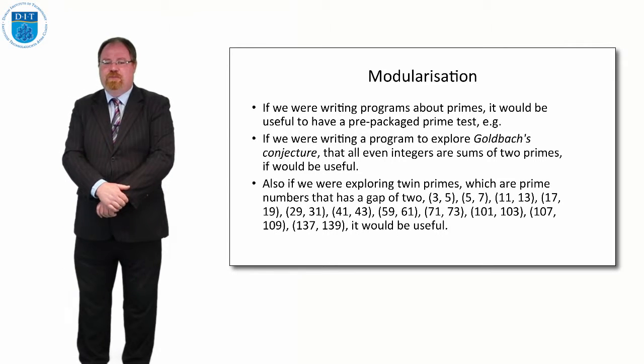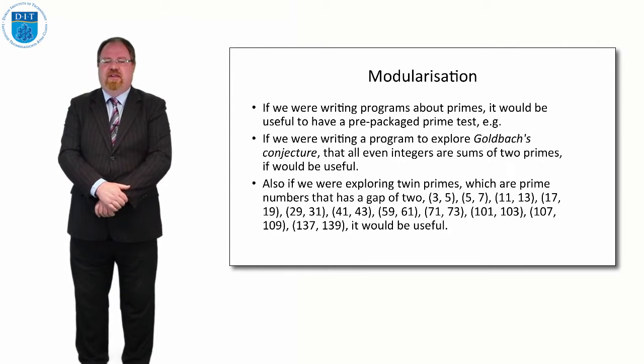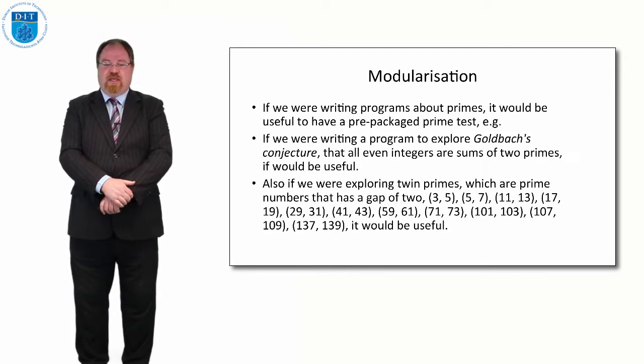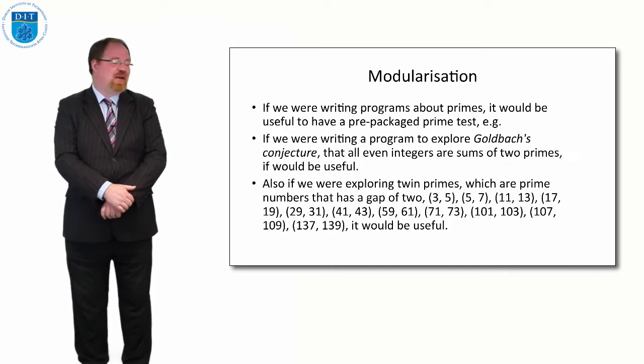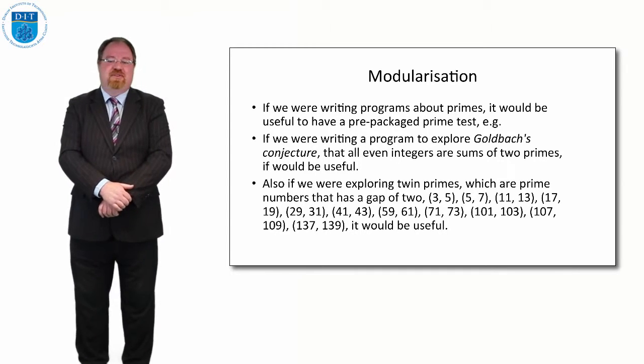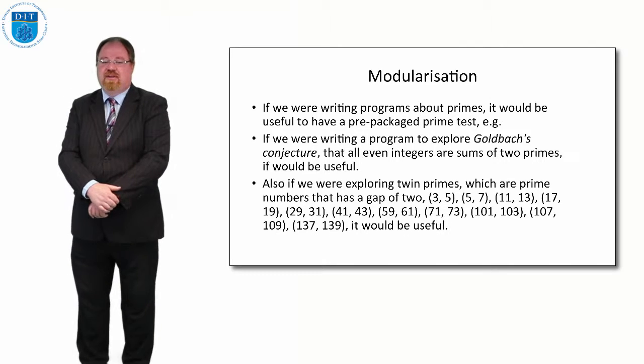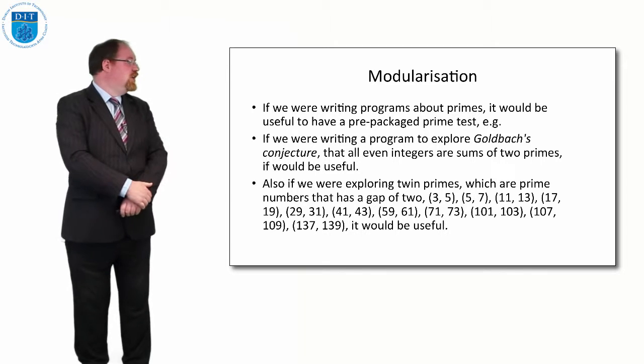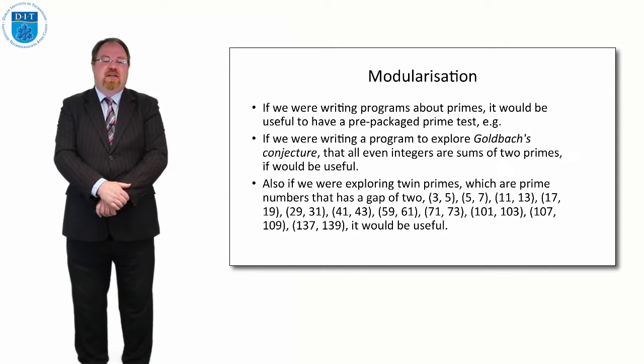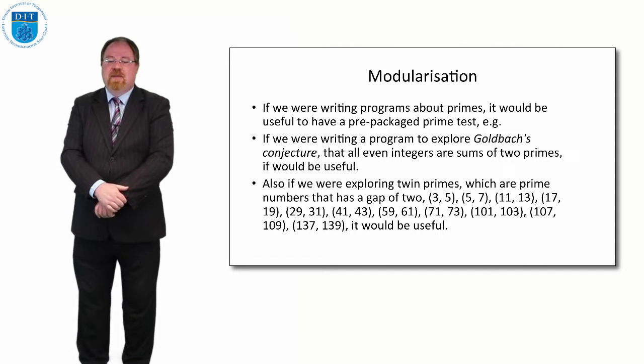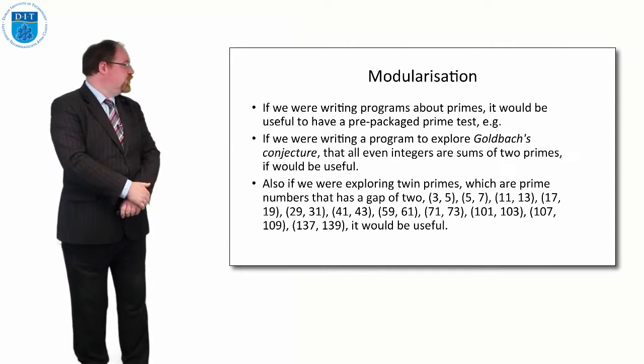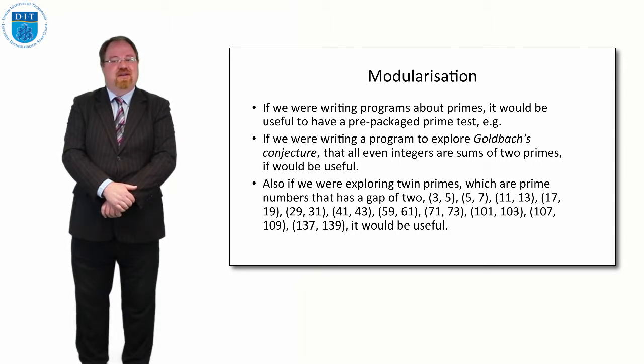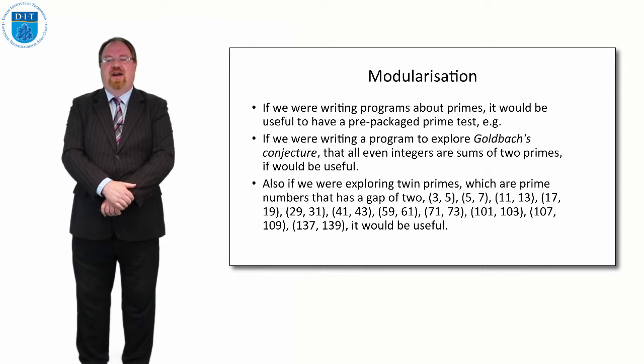There's also another theorem in large number theory called the twin prime theorem, which says that there are a number of primes that have a twin that is two digits higher than that prime. So for example, the numbers 3 and 5 are both prime difference of 2, numbers 5 and 7 are prime difference of 2, 11 and 13 are prime difference of 2, 17 and 19, 29 and 31, 41 and 43, 59 and 61, 71 and 73, 101 and 103, 107 and 109, 137 and 139, etc.